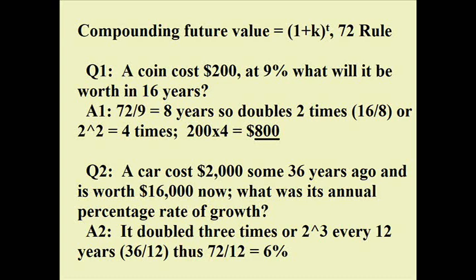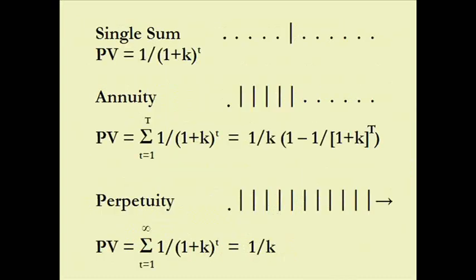Now let's go the other direction. A car cost $2,000 some 36 years ago and it's now worth $16,000 — a collector's item. What was its annual percentage rate of growth? Two into 16 is 8 times — that's 2 to the third power, so 3 periods. Three periods into 36 years means it doubled every 12 years. 12 into 72 gives us 6% annual rate of growth.